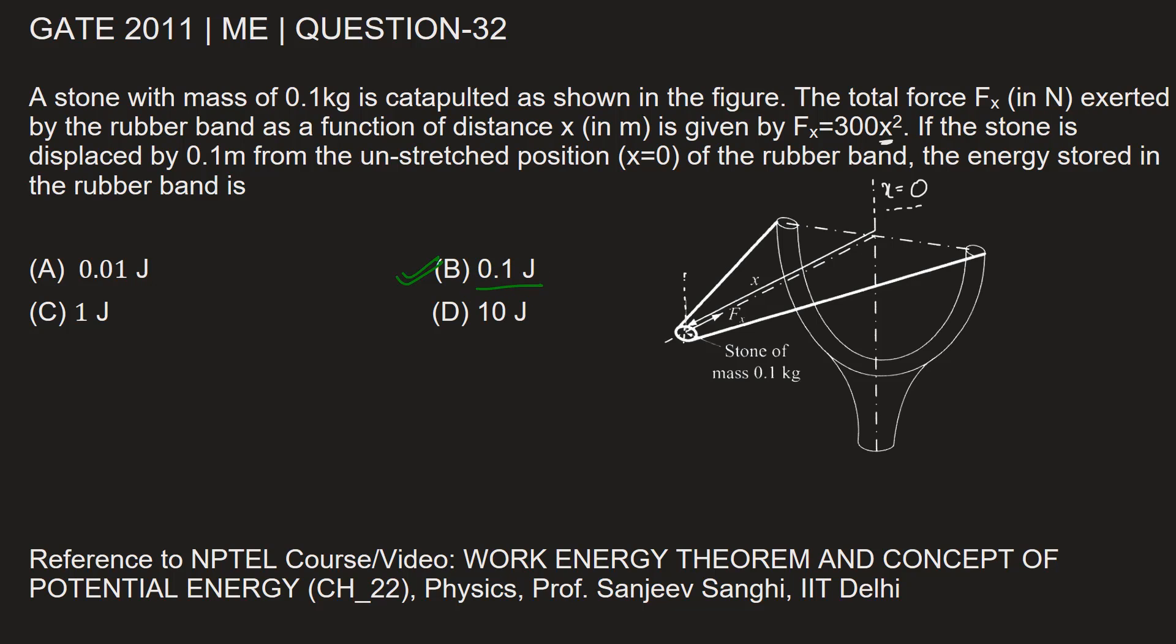To learn more about the work-energy principle, you can refer to the NPTEL video 'Work Energy Theorem and Concept of Potential Energy' CH-22. This energy that we found out here is nothing but the potential energy, because mechanical work done by the hand in pulling the rubber band is stored in the rubber band and thereby in the stone in the form of potential energy. This video is from the course of Physics. The course is by Professor Sanjeev Sanghi. He is from IIT Delhi. I hope the solution will help you clear your doubt. Thank you.